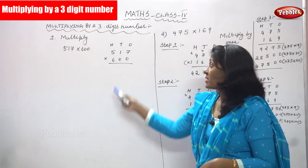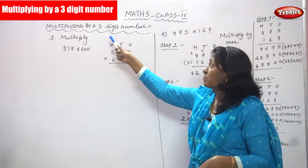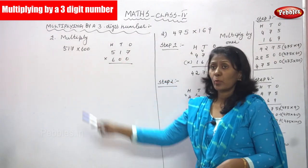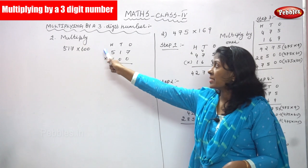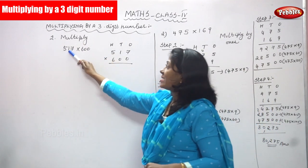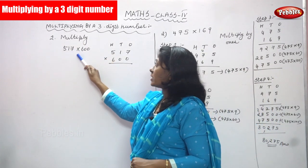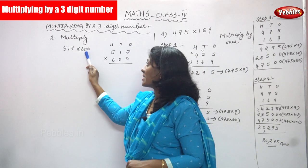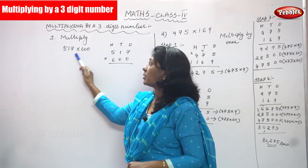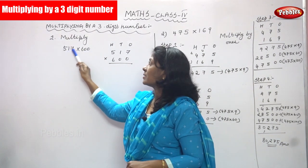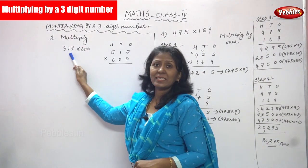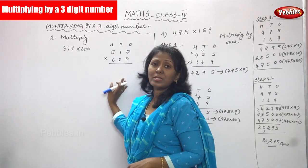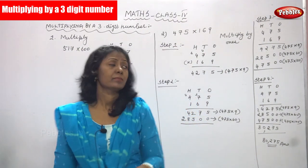Now we are going to see multiplying by a three-digit number. The question is: multiply 517 by 600. This is a three-digit number. We are going to do the sum. Let's start the problem.